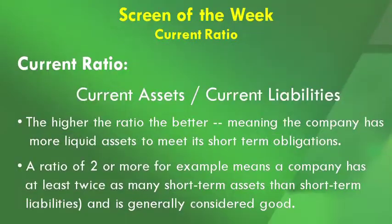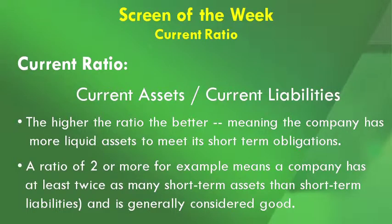The current ratio is simply another item to really help gauge a company's financial health. Current ratio is current assets divided by current liabilities. The higher the ratio, the better, meaning the company has more liquid assets to meet its short-term obligations. A ratio of two or more means a company has at least twice as many short-term assets than short-term liabilities, and that is generally considered good.